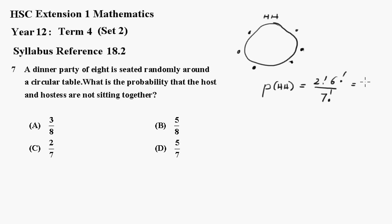And this comes out to 2/7ths. So the probability of them not being together will be 1 minus that, which is 5/7ths, which is D.